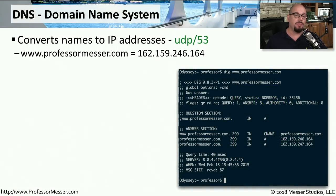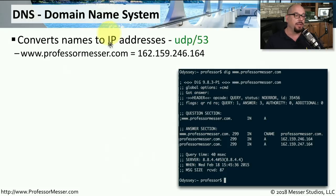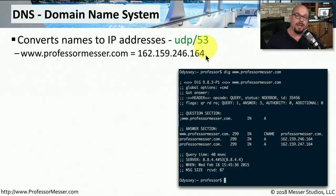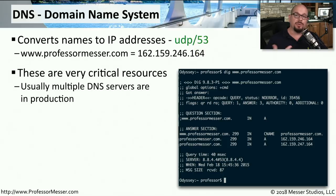If you're typing a website into a browser, you're probably using the name of the site — for example, www.professormesser.com. Behind the scenes, there needs to be a conversion between that domain name and the IP address of the web server. That's where we use DNS, which communicates over UDP port 53. This is converting those names to IP addresses and then back again. That information is sent to a DNS server, which responds back with an IP address associated with the web server. We rely on these DNS servers to provide this resolution, and since we mostly use domain names in a browser, we'll probably have multiple DNS servers so that if one becomes unavailable, others can provide that resolution.